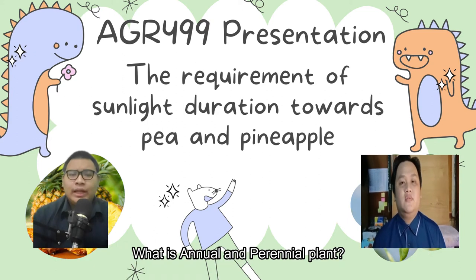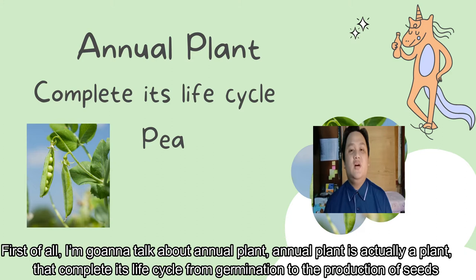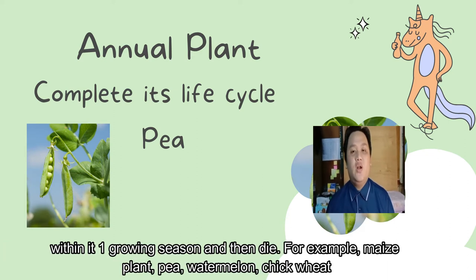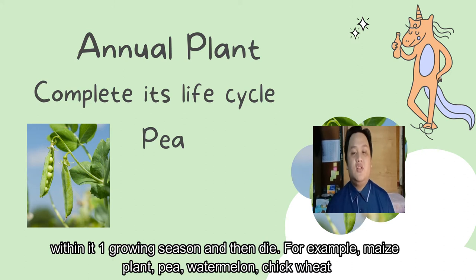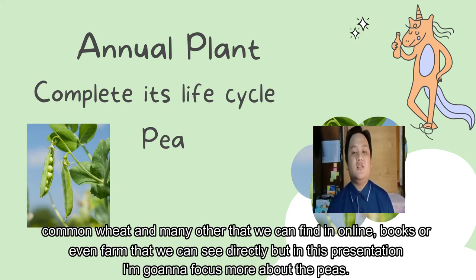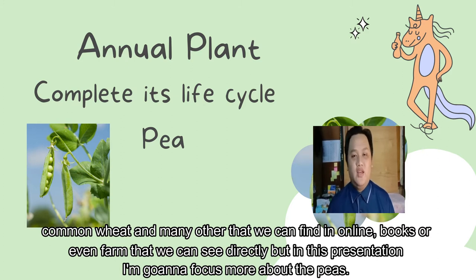What is an annual and perennial plant? First of all, I am going to talk about an annual plant. An annual plant is actually a plant that completes its life cycle from germination to the production of seeds within one growing season and then dies. For example, maize plant, peas, watermelon, chickweed, common weed, and many others that we can find online, in books, or even on farms that we can see with our own eyes.